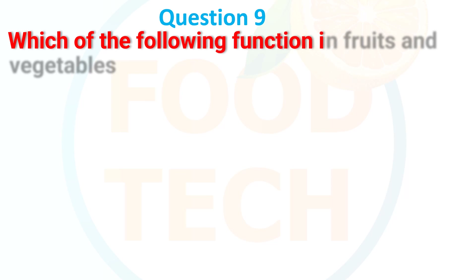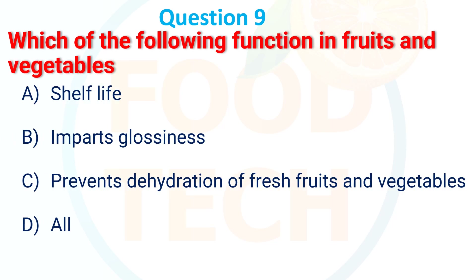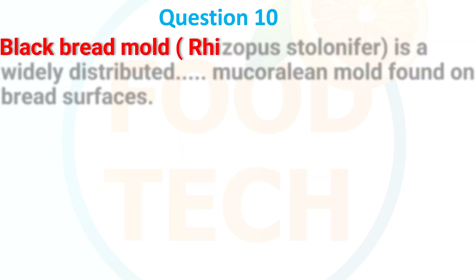Which of the following is the function of wax in fruit and vegetables? a) safe life, b) imparts gloss and glossiness, c) prevents dehydration of fresh fruit and vegetable, d) all. The answer is d) all.